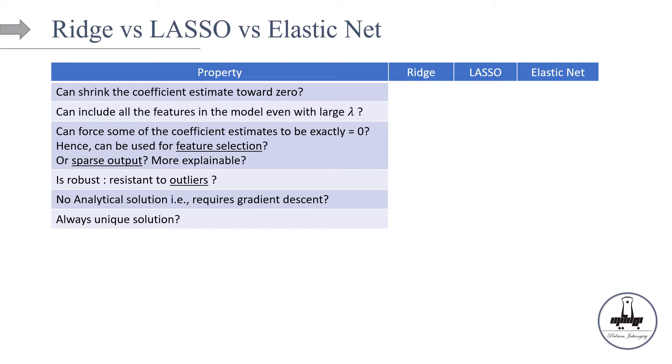So now let's do it together. First one: This model can shrink the coefficients towards zero. So ridge? Yes. Lasso? Yes. And elastic net? Yes. So that's the answer.